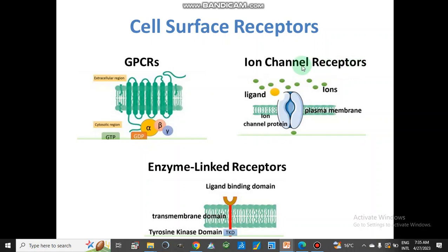The second type is ion channel receptors. When a ligand binds with this ion channel receptor, the opening of the ion channel causes ions to move across the plasma membrane. Enzyme-linked receptors contain an extracellular domain, a transmembrane domain, and an intracellular domain. The ligand or agonist binds to the extracellular domain, and the signal is transmitted from the intracellular domain by modification of proteins.